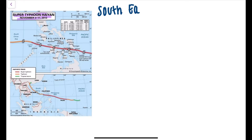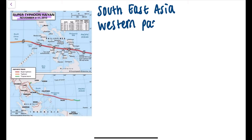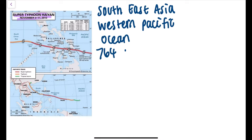It was a tropical storm located in South East Asia, and this typhoon originated in the Western Pacific Ocean, where the conditions were as required for a tropical storm to form — for example, ocean temperatures of above 26.5 degrees Celsius and a low wind shear.